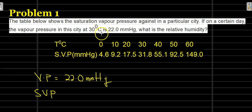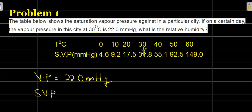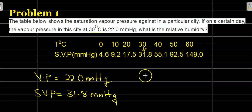And the saturated vapor pressure, SVP, at 30 degrees Celsius — looking at the table, we have temperatures listed: 0°C, 10°C, 20°C, and 30°C. At 30 degrees Celsius, the saturated vapor pressure is 31.8 millimeters of mercury. So our SVP is 31.8 mmHg.